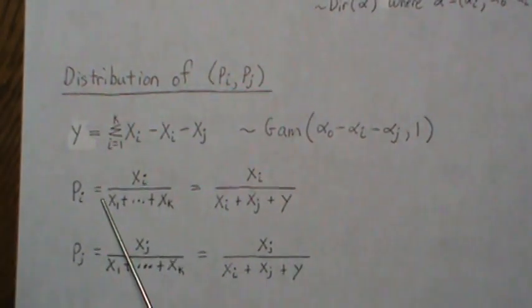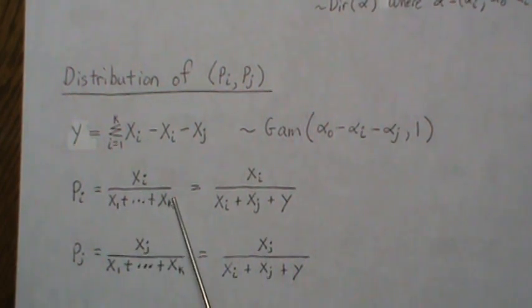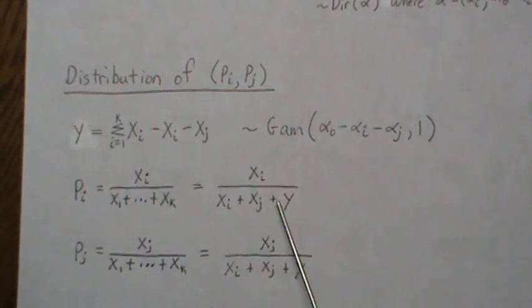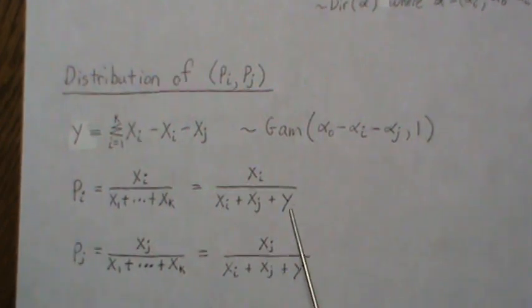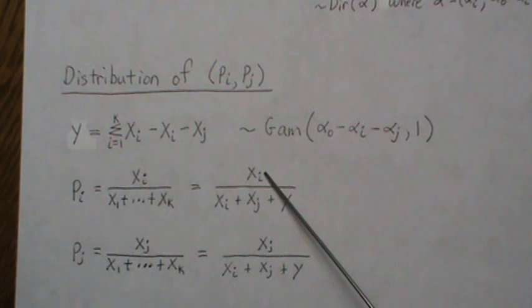So here, remember, pi was xi and the sum. But instead of sum and them all, we take out the i-th one and the j-th one, and then we just have y, which, and so really, this is the same as this. But we think about it as this is one gamma distribution, that's another gamma distribution, and that's the third gamma distribution.